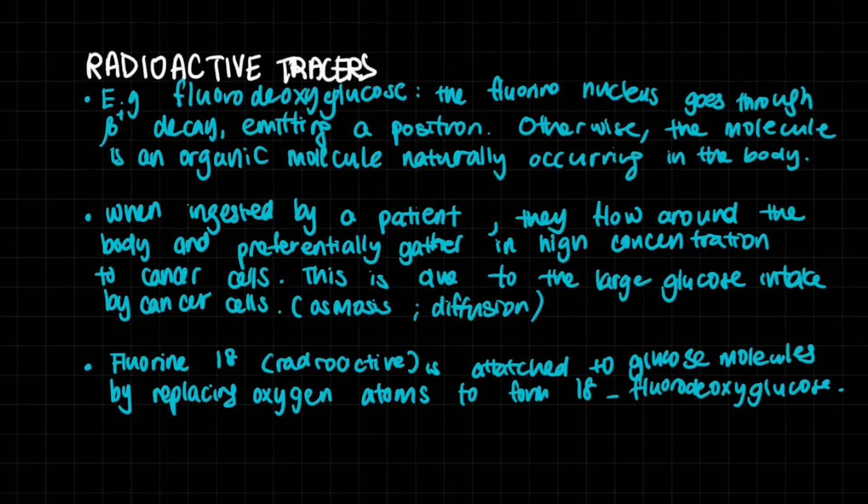To start it off, let's first talk about radioactive tracers. An example of a radioactive tracer is fluorodeoxyglucose. This is when the fluorine nucleus goes through beta plus decay. It's a radioactive isotope of fluorine and it will go through beta plus decay and emit a positron in order to stabilize itself.